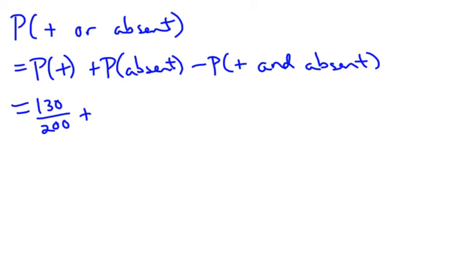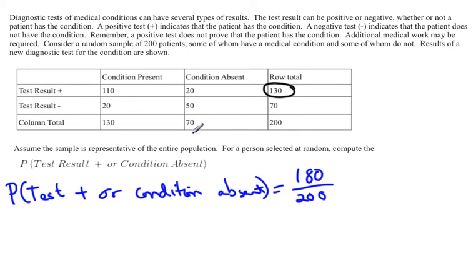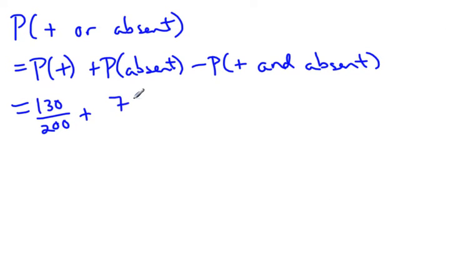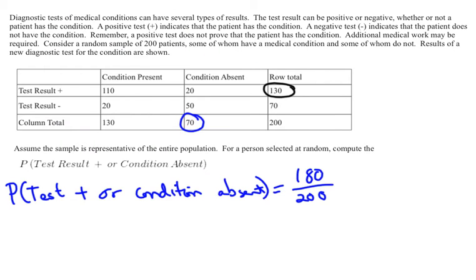The probability that the condition is absent is this column here, which means we're looking at these total 70 people. So 70 out of 200. But the problem is that we just counted these 20 people that have both things happening twice.